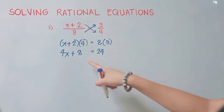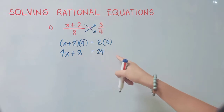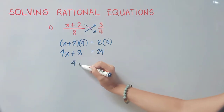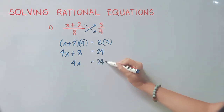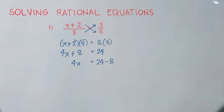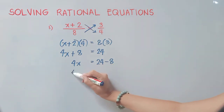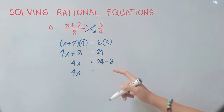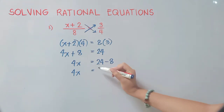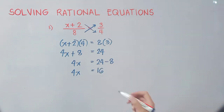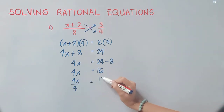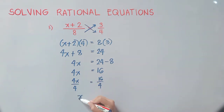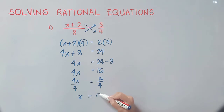Now retain the term with the variable on the left side. We will transpose 8 to the other side, so that is 24. From positive, it will become negative 8. Copy 4x, which is equal to 24 minus 8 is 16. So divide both sides by 4. Our final answer is 16 divided by 4 is 4.